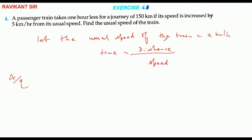What is the passenger train? One hour less. The speed of the train increased by 5 km per hour. First speed is 150 by x, the time is 150 by x plus 5.